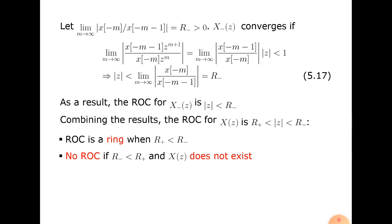The limit as m tends to infinity of x(−m) · x(m−1) equals r+. The series x−(z) converges if the limit as m tends to infinity of |x(−m−1) · z^(m+1)| divided by |x(−m) · z^m| equals the limit of |x(−m−1)/x(−m)| · |z|, which must be less than 1. So x−(z) converges if |z| is less than the limit as m tends to infinity of |x(−m)/x(−m−1)|, which equals r−.